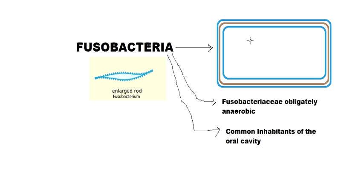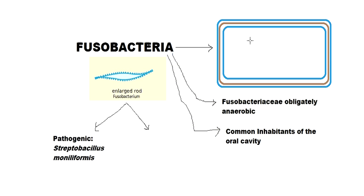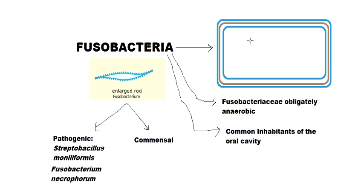Fusobacteria can be classified as sometimes pathogenic and sometimes commensal. Examples of pathogenic species include Streptobacillus moniliformis and Fusobacterium necrophorum. Let's look at the diseases they cause.